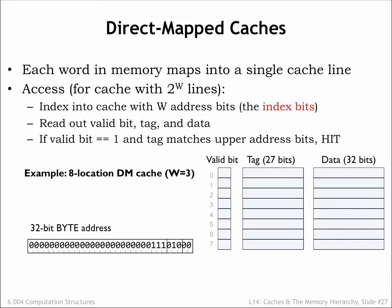In this design we've included an additional valid bit, which is 1 when the tag and data fields hold valid information. The valid bit for each cache line is initialized to 0 when the cache is powered on, indicating that all cache lines are empty. As data is brought into the cache, the valid bit is set to 1 when the cache line's tag and data fields are filled.